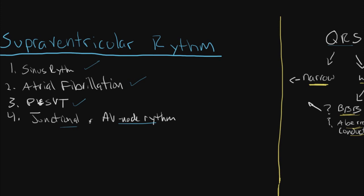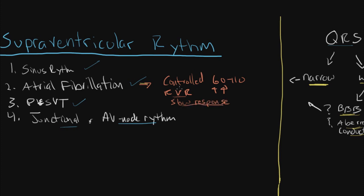AFib is the one we most commonly see. Whenever you see someone with AFib, it's always important to note what the rate is. Just writing atrial fibrillation by itself doesn't tell you the status of that arrhythmia. It's important to write if it's controlled — meaning a regular heart rate somewhere between 60 to 110 beats per minute — if you're having a rapid ventricular response (RVR) and your AFib is uncontrolled, or if you're having atrial fibrillation with bradycardia. Knowing what status your atrial fibrillation is in is very important.